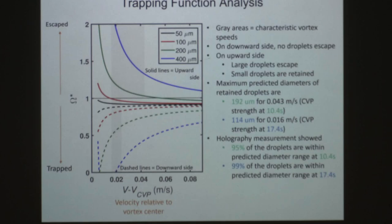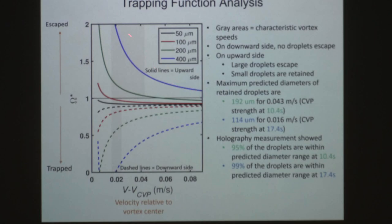On the x-axis we have the velocity that the droplet would experience — the velocity relative to the vortex center. On the y-axis we have the trapping function omega: if omega is greater than one the droplet escapes, less than one it will be trapped. We plotted characteristic droplet sizes of 50, 100, 200, and 400 microns. Solid lines represent droplets on the upward side of the vortex; dotted lines represent the downward side.